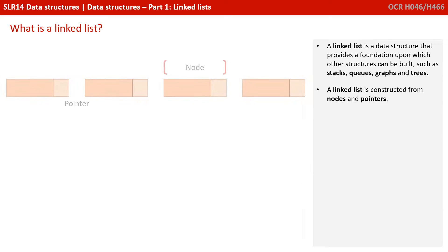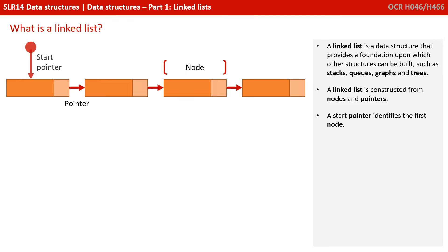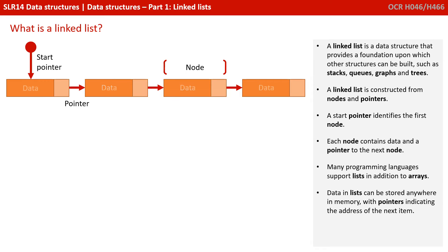A linked list is constructed from nodes and pointers. A start node identifies the first node, and each node contains data and a pointer to the next node.